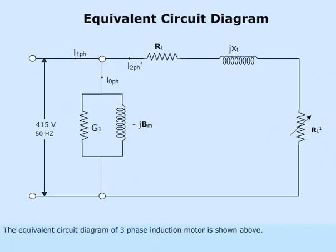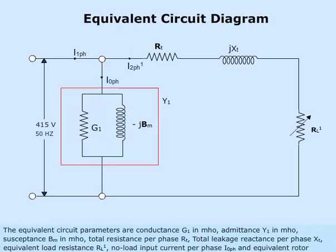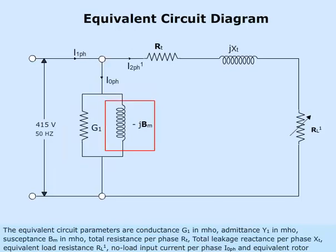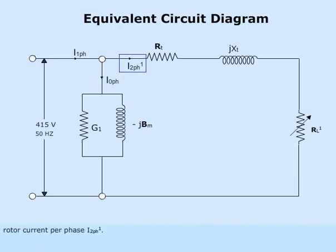The equivalent circuit diagram of the three-phase induction motor is shown above. The equivalent circuit parameters are: conductance G1 in mho, admittance Y1 in mho, susceptance BM in mho, total resistance per phase RT, total leakage reactance per phase XT, equivalent load resistance RL1, no-load input current per phase I0_pH, and equivalent rotor current per phase I2_pH1.